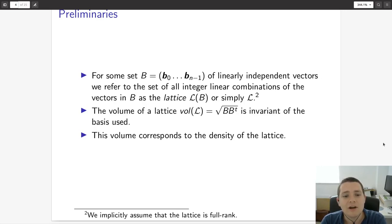Lattices have an associated invariant known as the volume. You can see that this is efficiently computable for some set B when the vectors are linearly independent. This volume also has a nice geometric property. It corresponds to the density of the lattice. If your volume is small, it implies your lattice is very dense, whereas if you have a large volume, it implies the lattice is rather sparse.